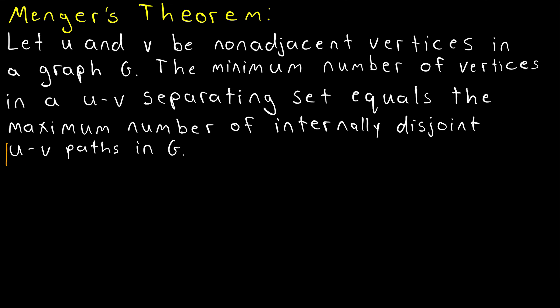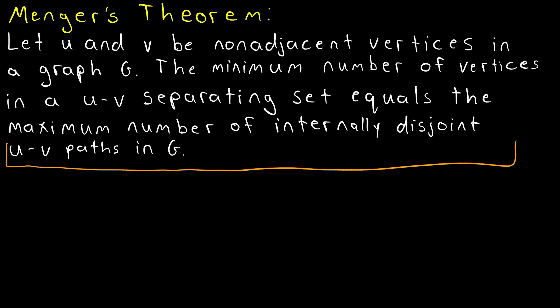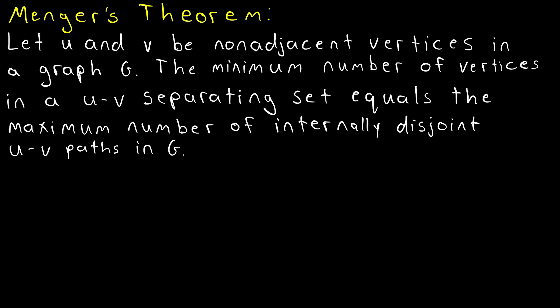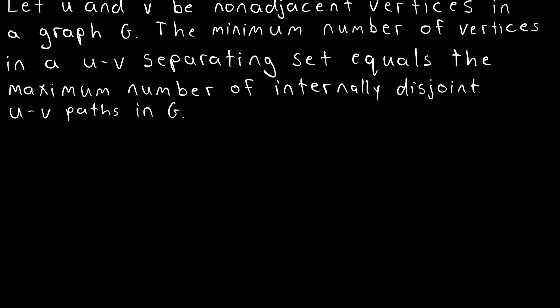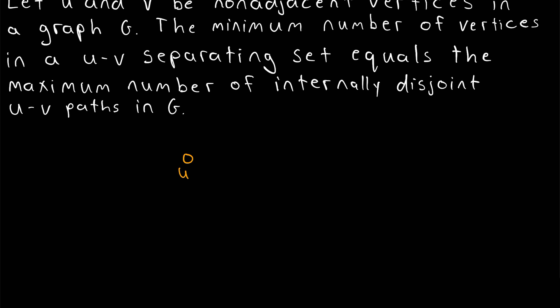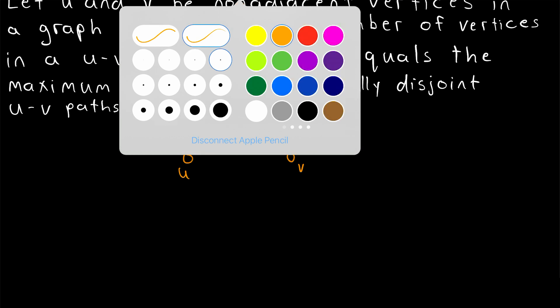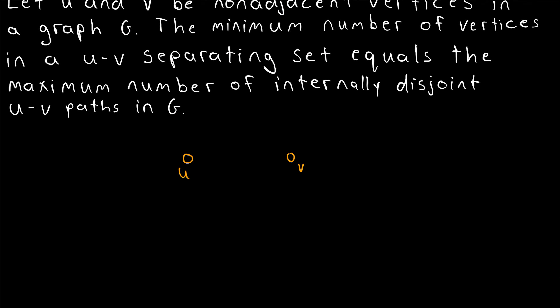I'm assuming that you are basically familiar with this theorem and the concepts involved, but if you're not, there are links in the description to my lessons on separating sets, internally disjoint paths, and a lesson introducing the theorem without proof. So let's not spend too much time dilly-dallying in this lesson because the proof is fairly long. I definitely don't think this result is obvious. Certainly the proof isn't trivial, but I do think it's pretty intuitive.